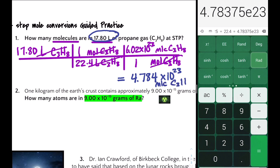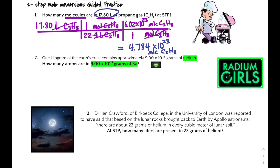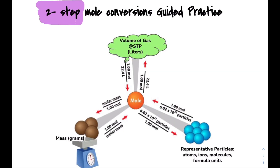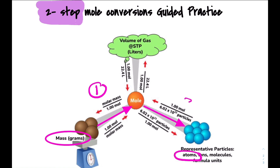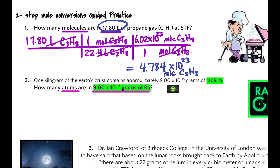Now let's take a look at number two. One kilogram of the earth's crust contains approximately 9.00×10⁻¹⁵ grams of radium. How many atoms are in that many grams of radium? In this problem we're given grams, and for our first step we're going to convert grams to moles. Since we're asked for atoms, we'll be going from moles to representative particles — the number of atoms — as our second step. Let's set up our dimensional analysis.